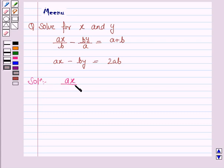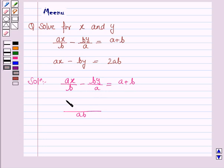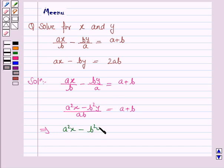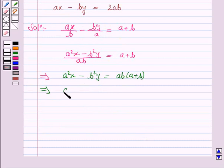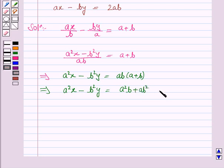The first equation given to us is ax upon b minus by upon a is equal to a plus b. Let us simplify this equation by taking LCM, which is ab. In the numerator we'll have a²x minus b²y equal to a plus b, which implies a²x minus b²y equals ab(a + b), that is a²b plus ab². Let's name this equation 1.